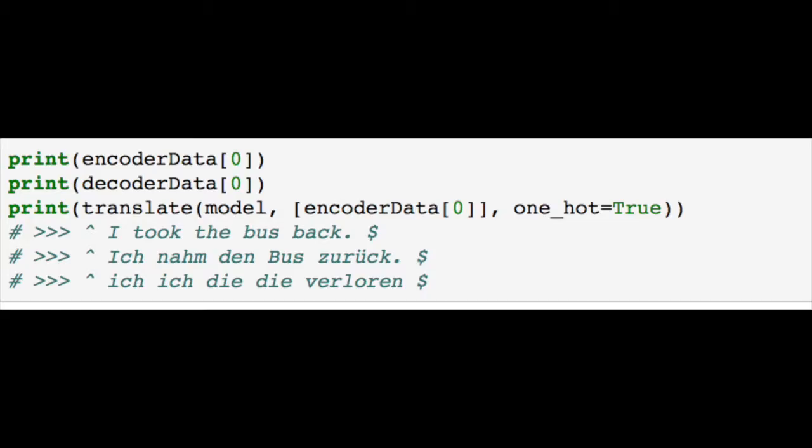The following commands were written in Python notebook to test the output of the algorithm. The figure shows the result. Encoder data is the input, decoder data is the target and the output of the model comes from the function translate. If you see, here caret is the start token and dollar is the end token. The first line I took the bus back is the input in English. Second line of the output is the target translated text. And the third line is the actual output that the model produced.